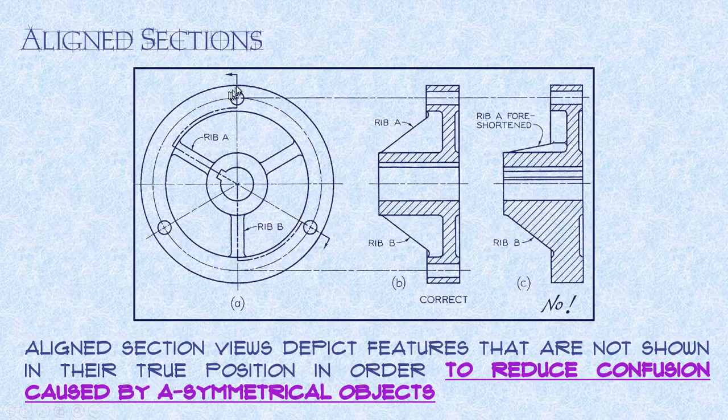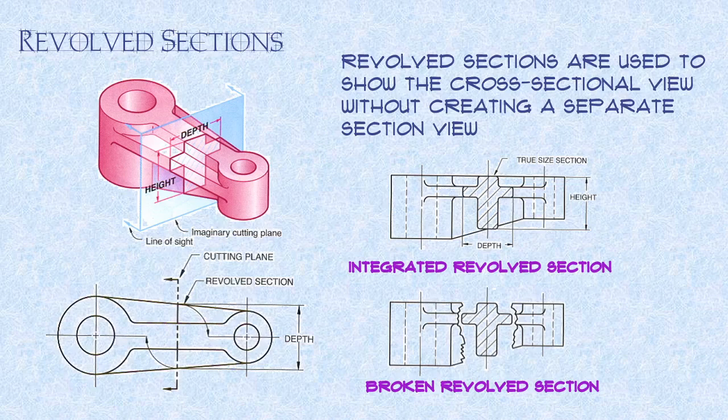So we project these elements over. So I project over, there's the top, there's the top of the hole, it projects over. Here's the bottom of the hole, projects over. Now we're going through a rib. So if you imagine what's going to happen here is I'm going to revolve this section up the 60 degrees to bring it into alignment with this cutting plane line, and then I'll project those elements over and then revolve it back into shape, into place. And that's what's taking place. This is what aligned views do. It says aligned section views depict features that are not shown in their true position in order to reduce confusion caused by asymmetrical objects. And once again, until you've drawn a few of these, the process itself may seem a little complicated.